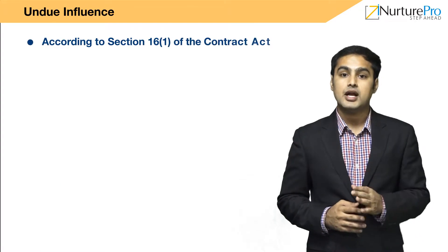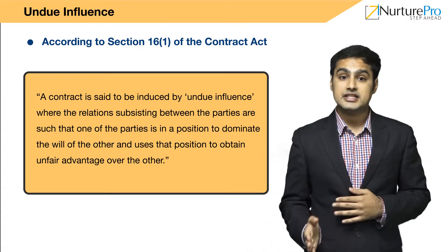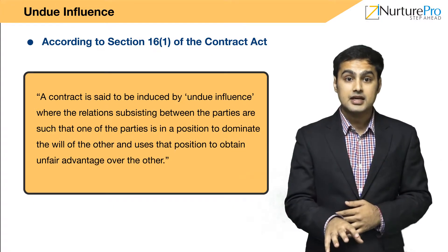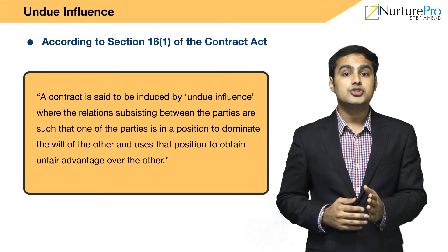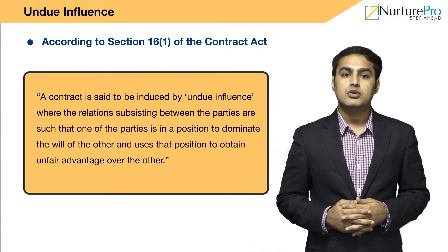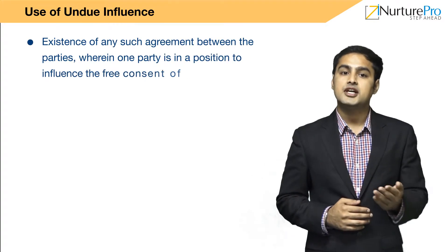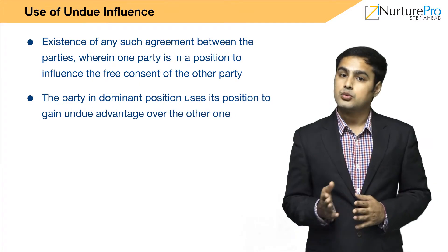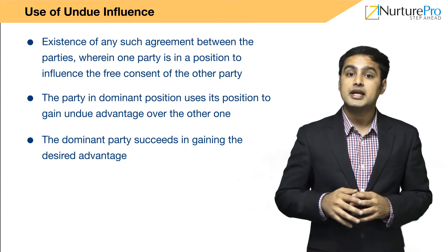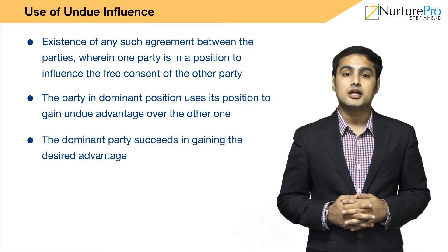According to Section 16 of the Contract Act, a contract is said to be induced by undue influence where the relations subsisting between the parties are such that one of the parties is in a position to dominate the will of the other and uses that position to obtain unfair advantage over the other. Undue influence means dominating the will of the other person to obtain an unfair advantage, where one party is in a position to dominate the will of the other and uses that position to their benefit.